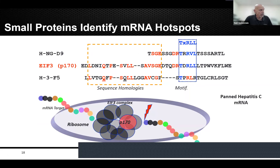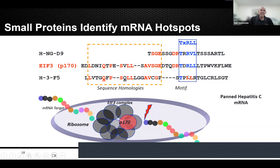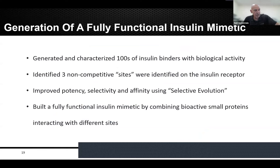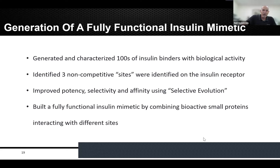In another example, we panned mRNA and found a motif — TX (x being any amino acid) arginine-leucine-leucine — which came up from two independent panning experiments. When we BLASTed it, we found a protein called p170, part of the eIF3 complex found in ribosomes and responsible for translation. The goal here was potentially to make a biological therapeutic that would block translation of hepatitis C mRNA. This is another example I'm quite proud of: we identified a fully functional insulin mimetic that was different from and smaller than insulin, with better biochemical properties — very stable at high temperatures. We did this in collaboration with Novo Nordisk.